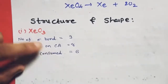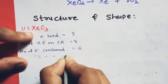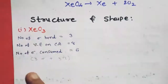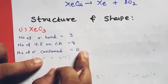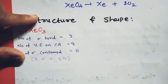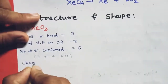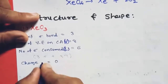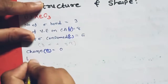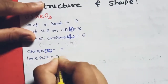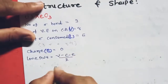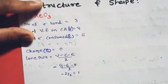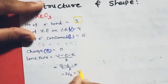Charge = 0. Loan pairs = (V − C − E)/2 = (8 − 6 − 0)/2 = 1. So sigma bonds = 3, lone pair = 1. Number of orbitals = 3 + 1 = 4, giving sp³ hybridization.